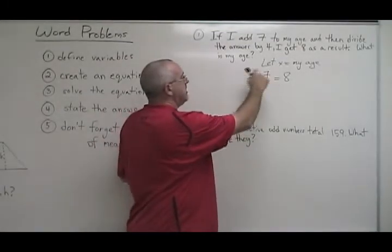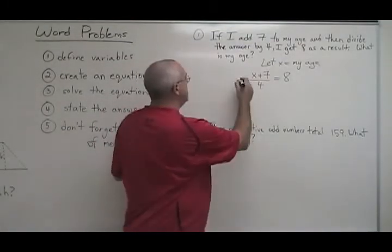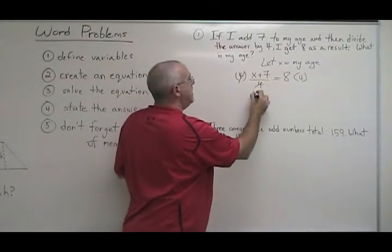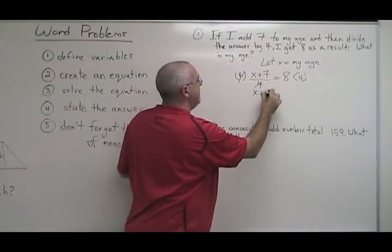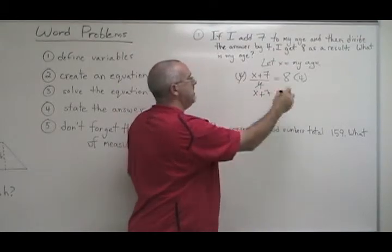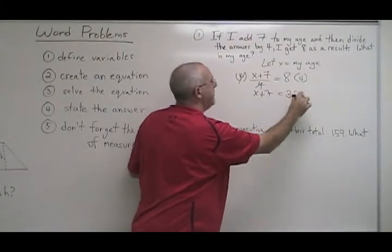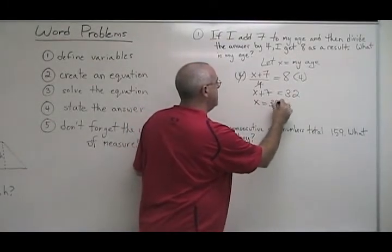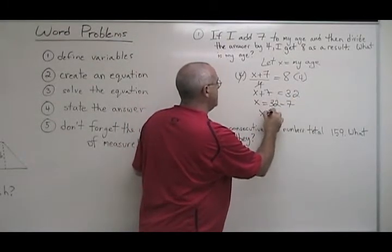My algebraic expression is being divided by a 4, so I'm going to multiply both sides of the equation by 4. These cancel and I end up with x plus 7 equals 8 times 4 is 32. Move the 7 to the other side and you'll get x equals 32 minus 7, x equals 25.